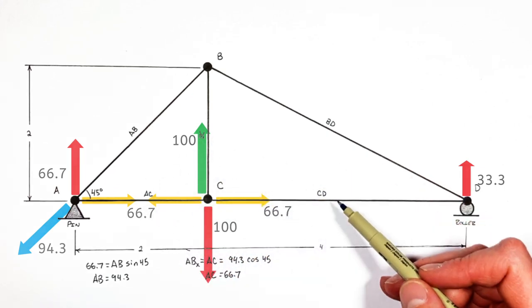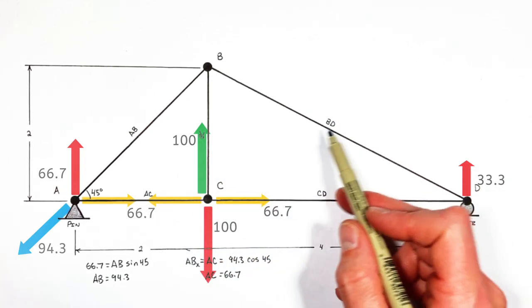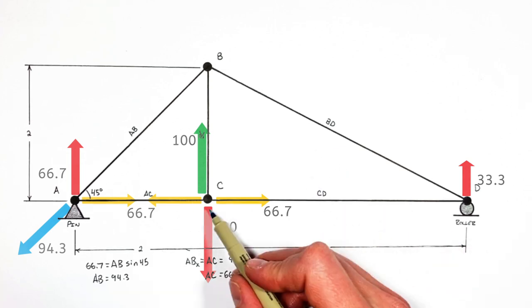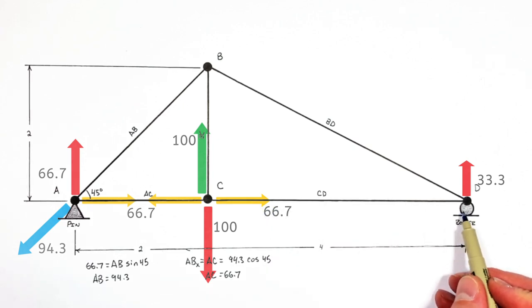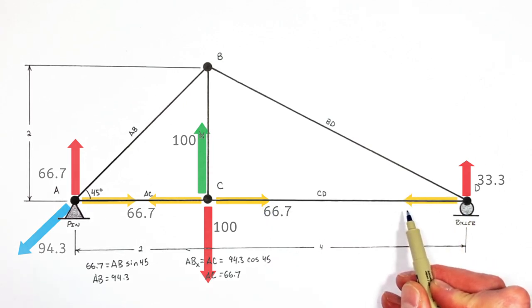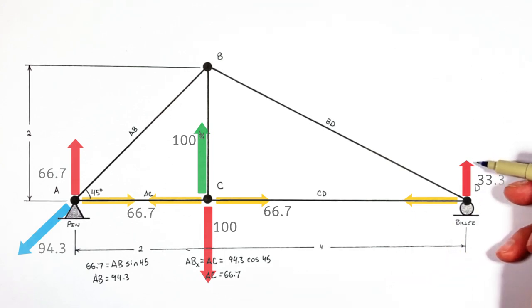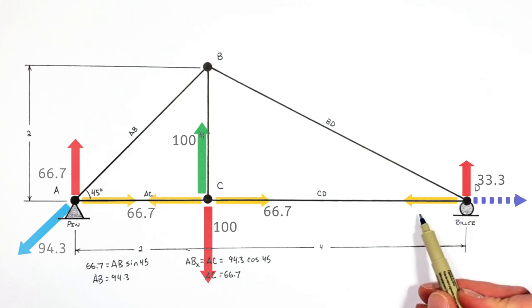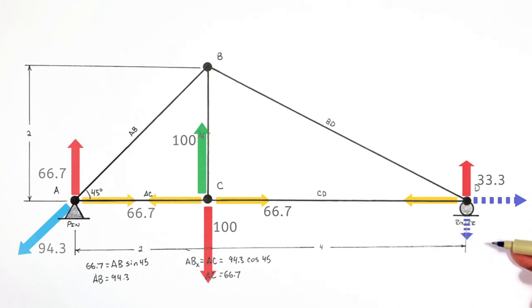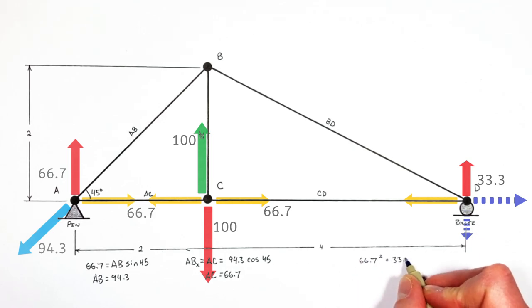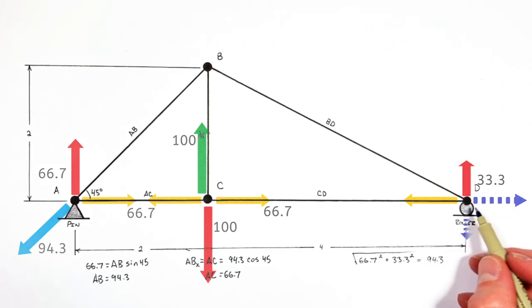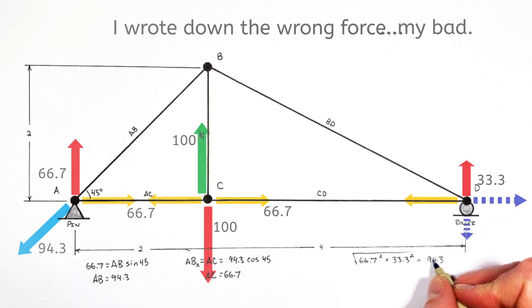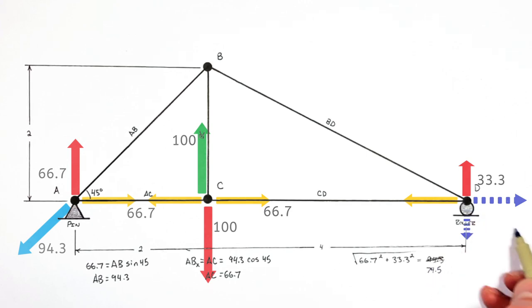Now having figured out four beams, we look at joint D to solve for the fifth beam, BD. Beam CD is pulling to the left at joint D with a force of 66.7, and the roller is pushing up with a force of 33.3. All BD does is cancel out those horizontal and vertical forces on this joint. The horizontal component of BD is 66.7 and the vertical component downward is 33.3. Applying the Pythagorean theorem, we find the force in BD is 74.5.